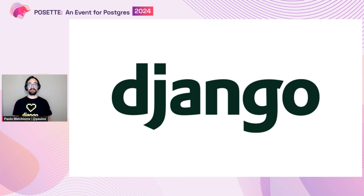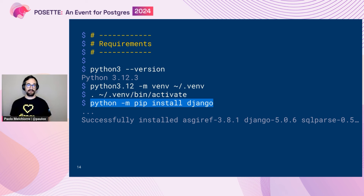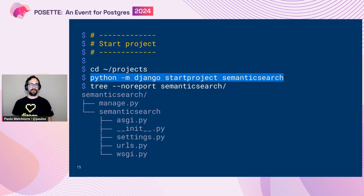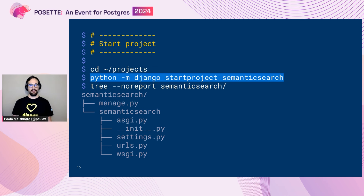We're going to use Django by setting up a project properly using its commands. Before starting, I want to show you the code I'm using for all the steps in this workshop. The first thing is to verify the Python version, create a virtual environment and activate it, and inside it install Django. After that, we can start creating our project, moving into our project directory and using the startproject command. I named my project SemanticSearch.